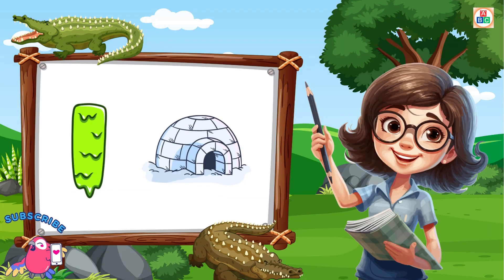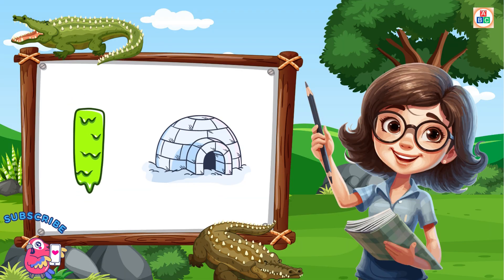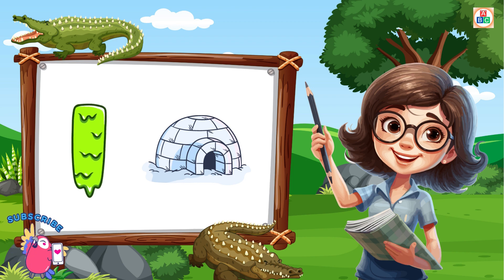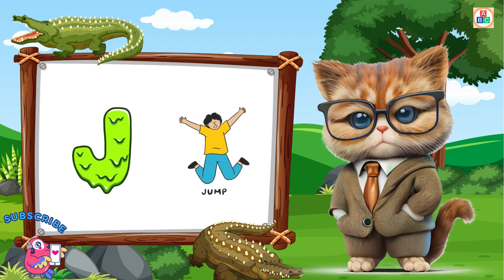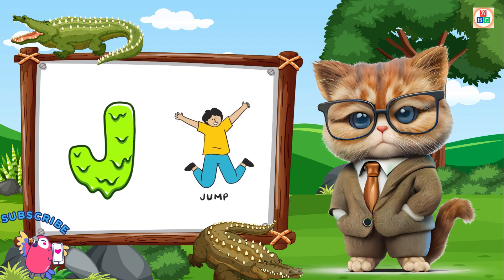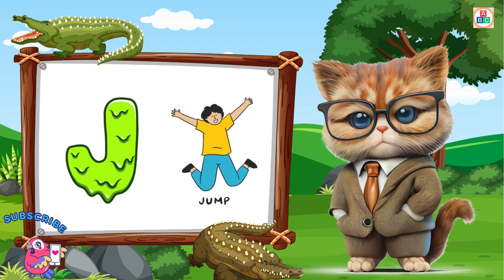I is for igloo, i-i-igloo. J is for jump, j-j-jump.